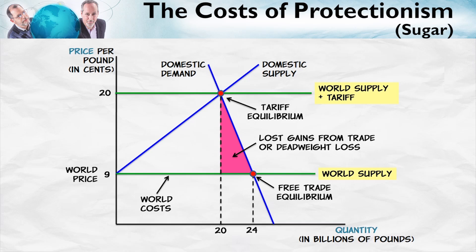Consumers are willing to pay more than the world suppliers require to produce the good. So by getting together, the consumers and the world suppliers can earn these gains from trade. With the tariff, however, that's not possible — we have reduced consumption, and with that reduced consumption are lost gains from trade given by this purple area.